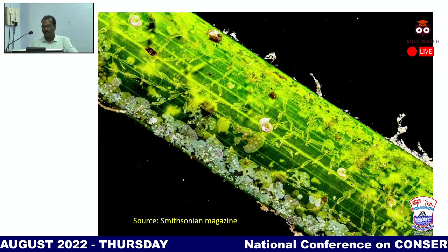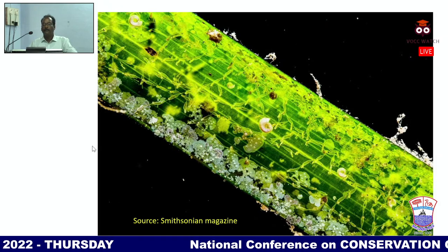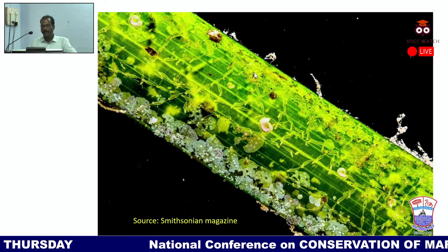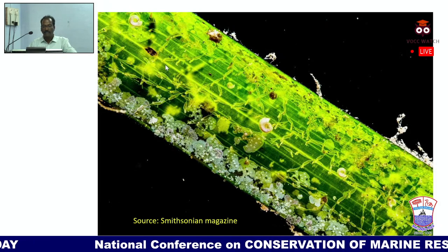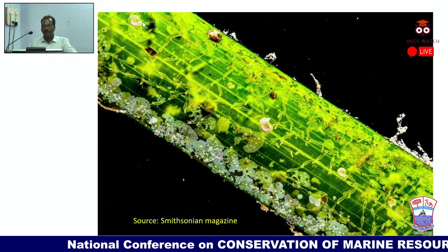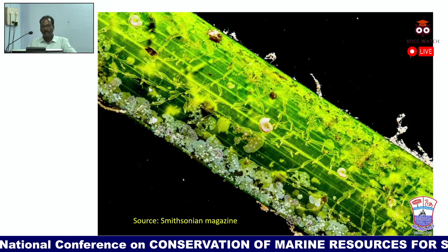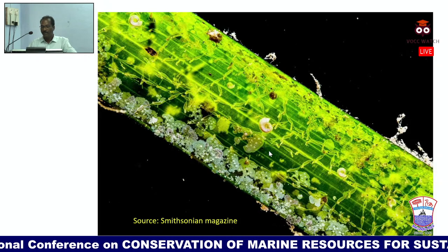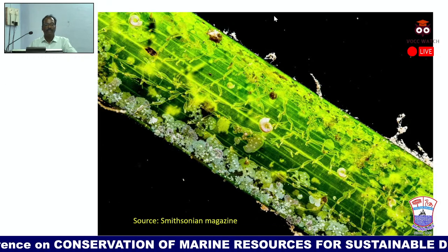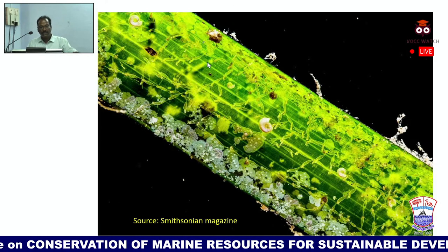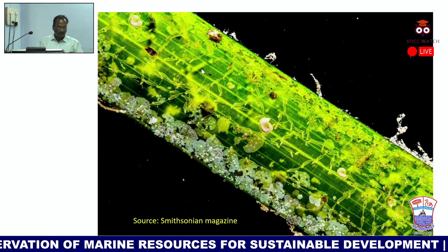A close-up image of a seagrass leaf — called a blade — reveals a rich microscopic community. Mollusks, crustaceans, and various microalgae live on the seagrass blade as epiphytic organisms. The nerve structure of the seagrass blade is also visible, with many animals living on it, showing the enormous diversity of resources provided within seagrass ecosystems.